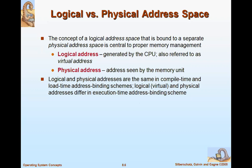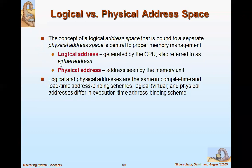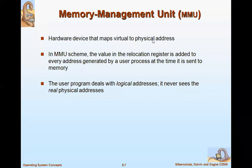The processor needs to know where instructions are stored in memory, so it generates two types of addresses: logical and physical. To map logical to physical addresses, we use a special hardware unit called the Memory Management Unit (MMU). Logical addresses are also called virtual addresses — both terms mean the same thing.